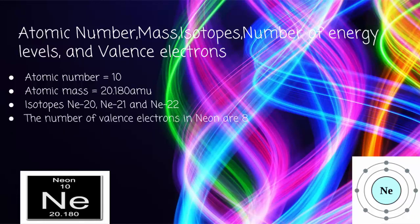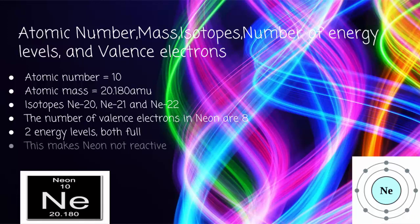The number of valence electrons in NEON is 8. Neon has two energy levels, and they're both full, so it's not reactive. The atomic mass is the SI unit used to measure the mass of a proton. The atomic number is the number of protons. Isotopes are atoms that differ in the number of neutrons. Valence electrons are electrons in the outer energy level of an atom.